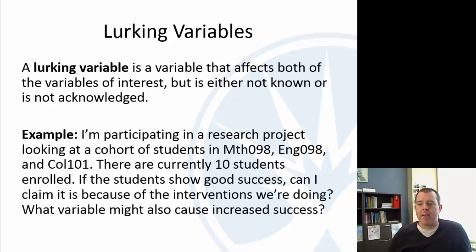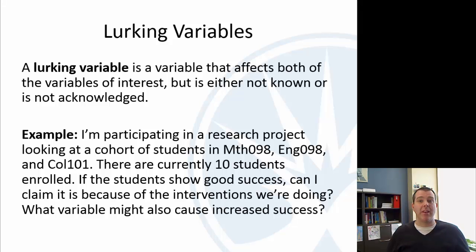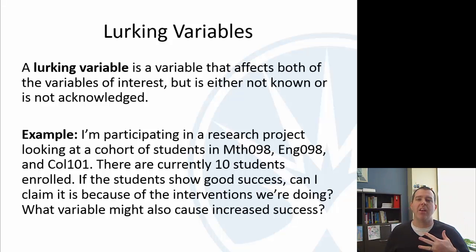Here's an example. I've got a research project going with a cohort of students — currently ten students in that particular section. If my students end up doing really well, can I claim it's because of the interventions we're doing? The problem with claiming any significant results is that I only have ten students. Maybe the small class size is affecting it and that's why they're doing so well — that's a lurking variable I can't really control for, because I didn't do an experiment with another cohort of the same classes without the intervention also having ten students. So it's hard to determine that any special interventions or projects were the cause of the difference.